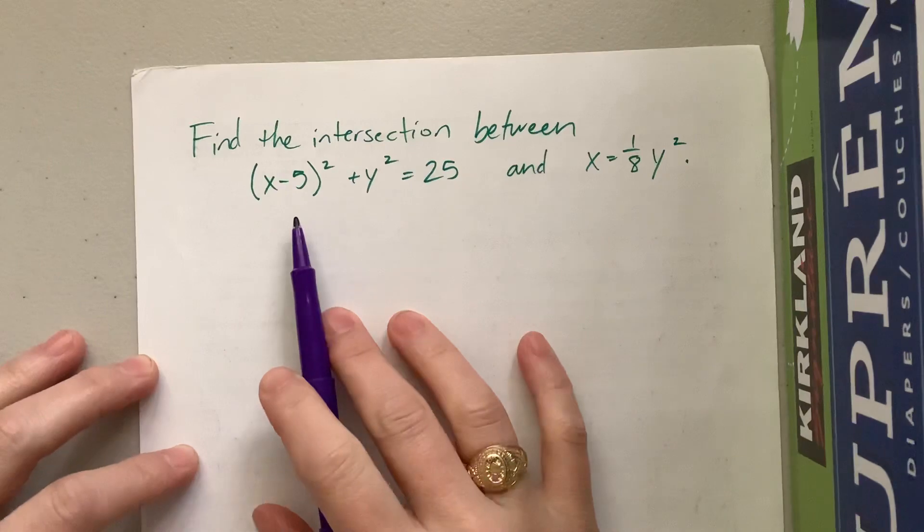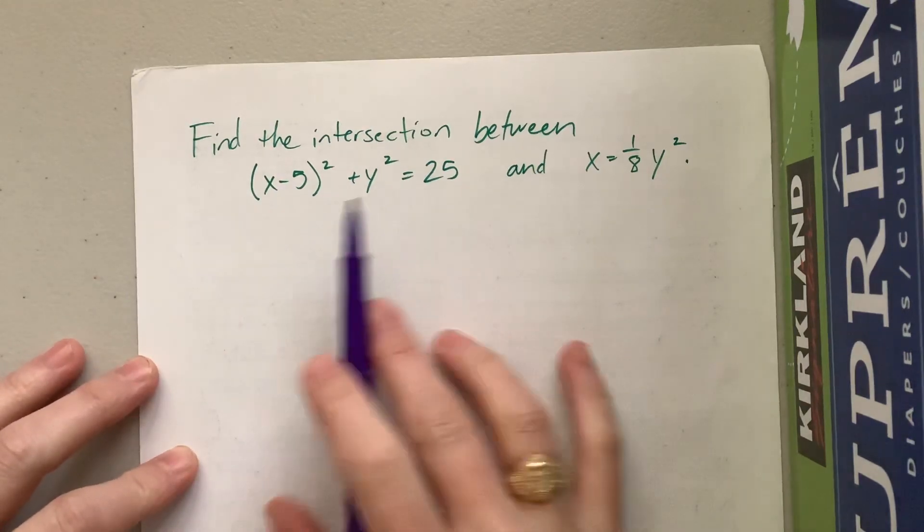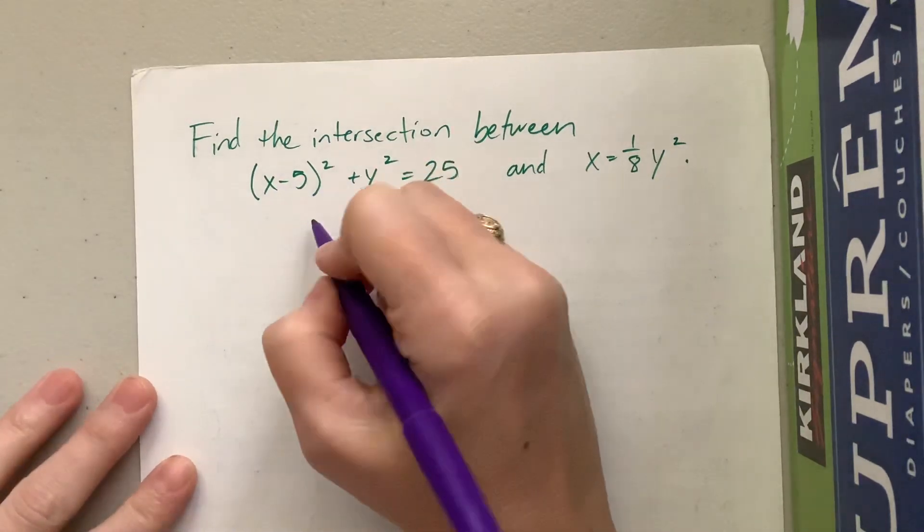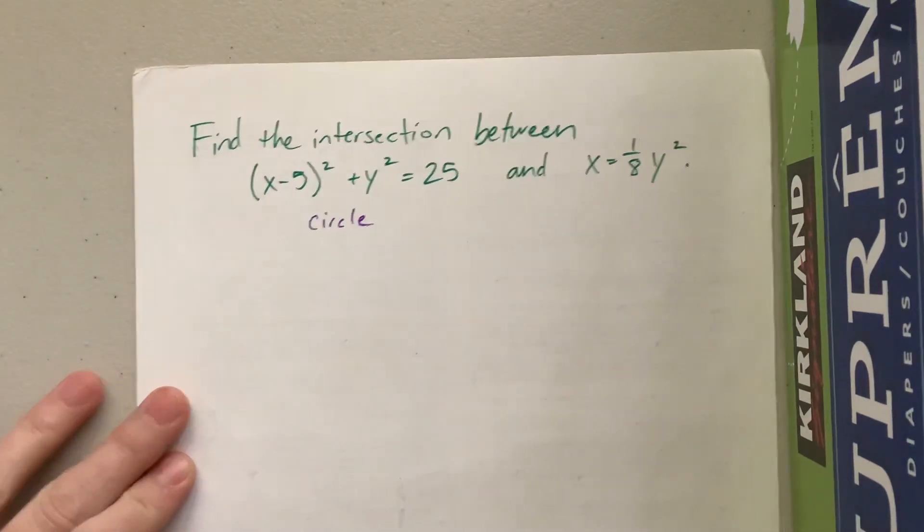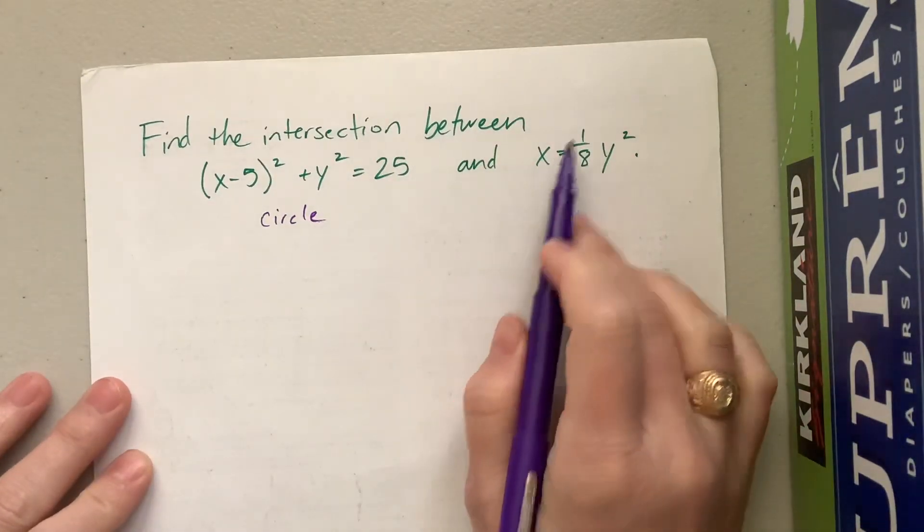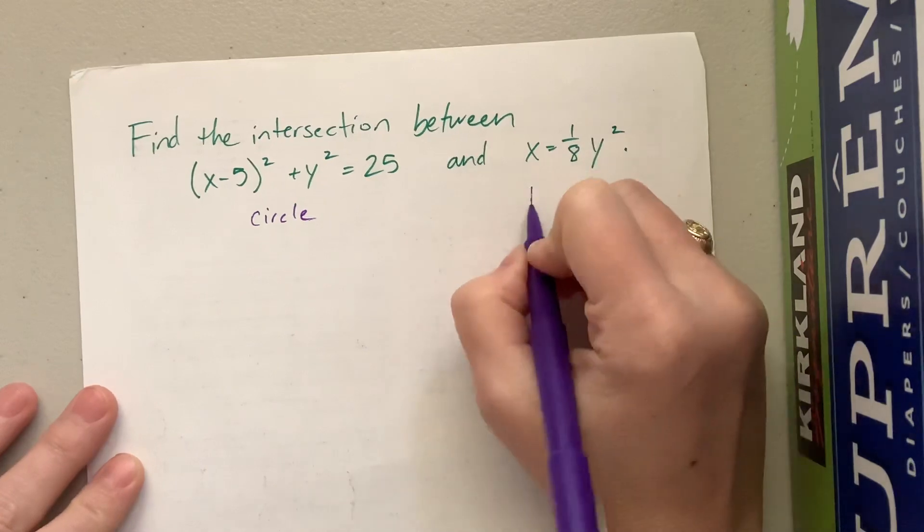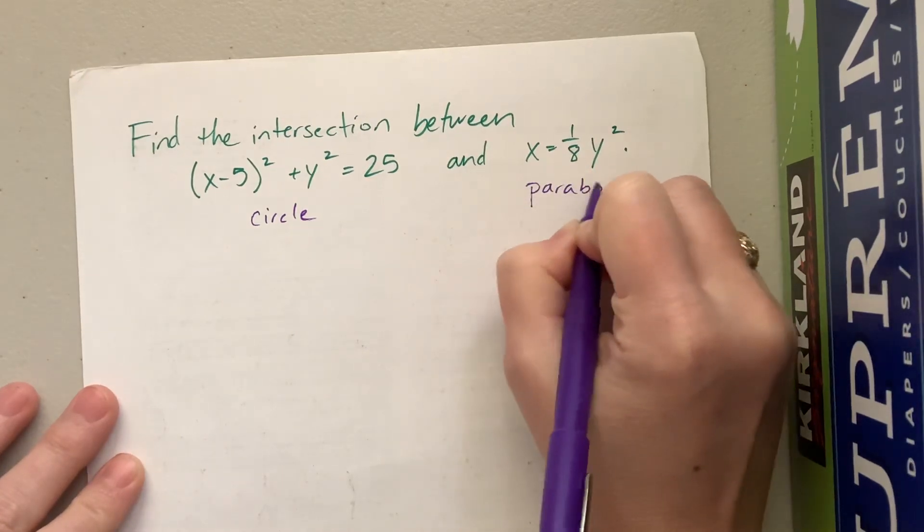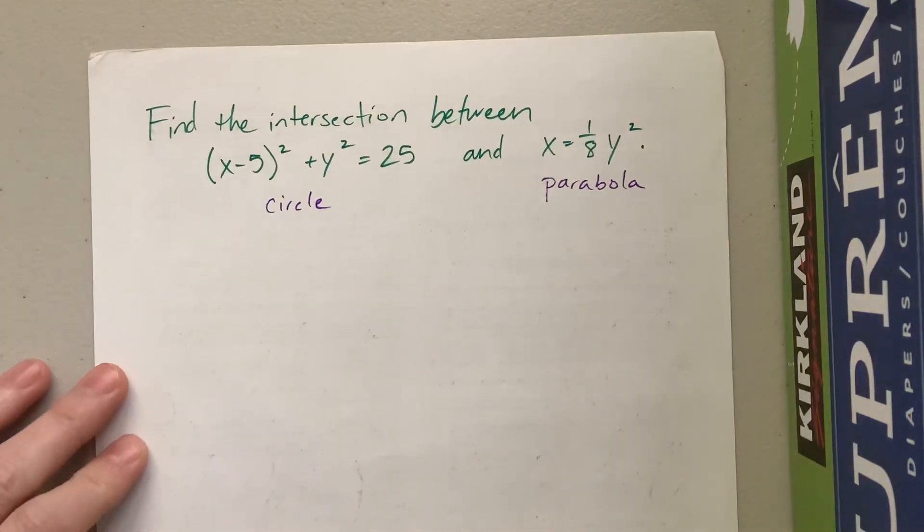So to begin with it says find the intersection between, well, what is this shape? Hopefully you recognize immediately that this is a circle, and then this one right here, notice that the y is squared but the x is not, this is a parabola. And we want to find where do these intersect.